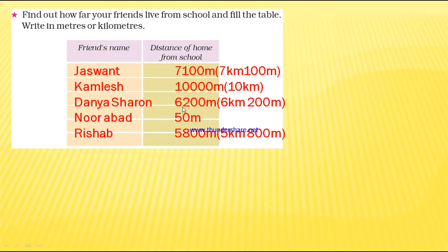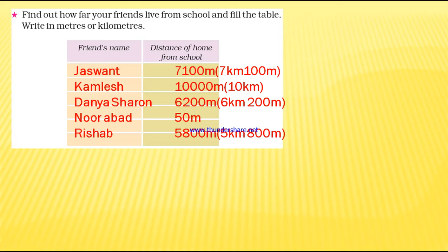Daniel Sharon, 6200 meters — so 6 kilometers, 200 meters. Noorabad is from the hostel, just 50 meters from his hostel to the school block. Then Risha, 5800 meters — 5 kilometers, 800 meters. So the friends' names and their distances from home to school are given here.